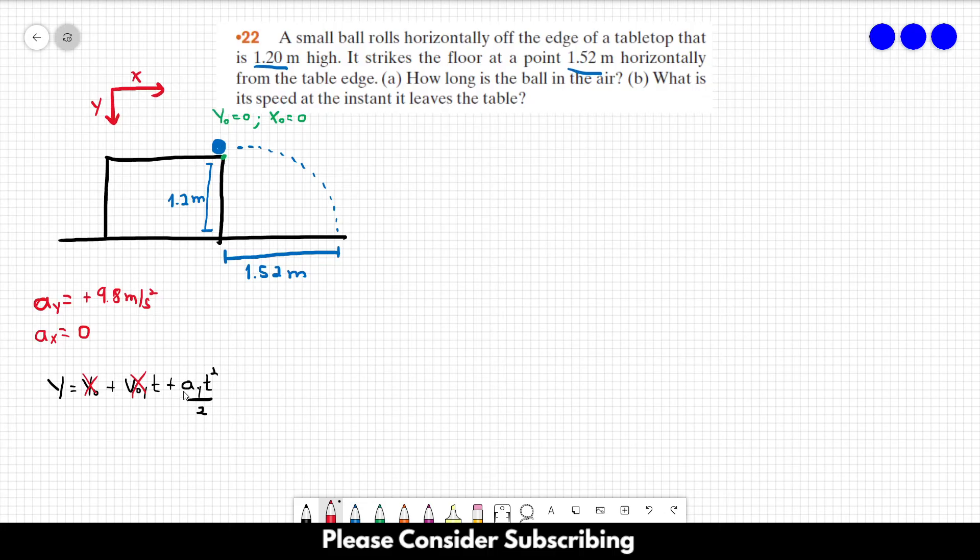The acceleration is the acceleration of gravity, this one over here, and t is what we want to find out. And the final y over here is 1.2 meters. So all we have to do is to isolate t, and that's pretty much it.